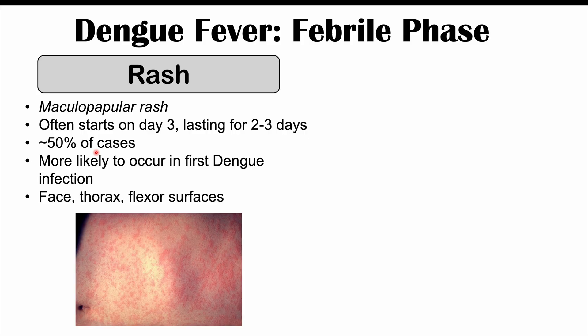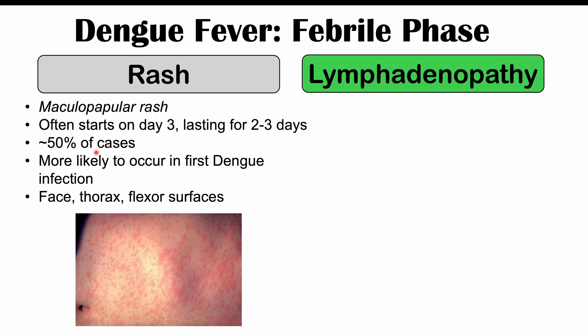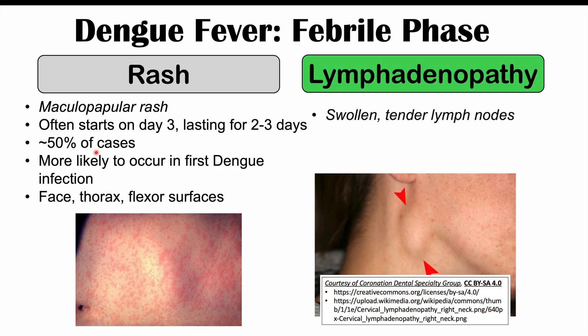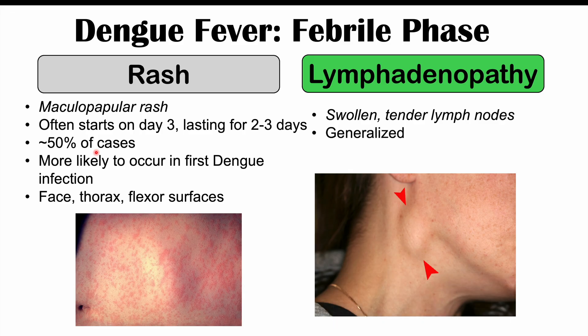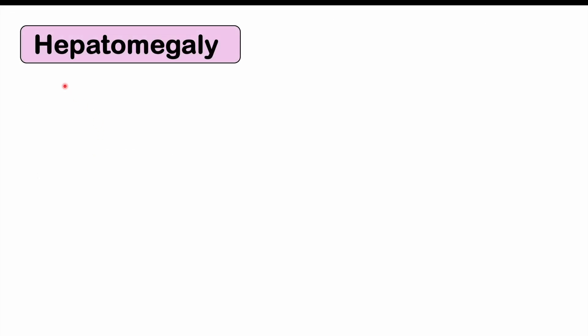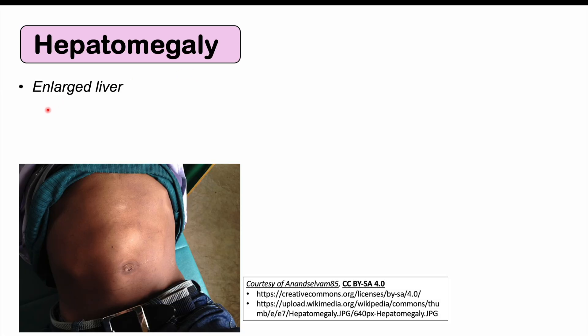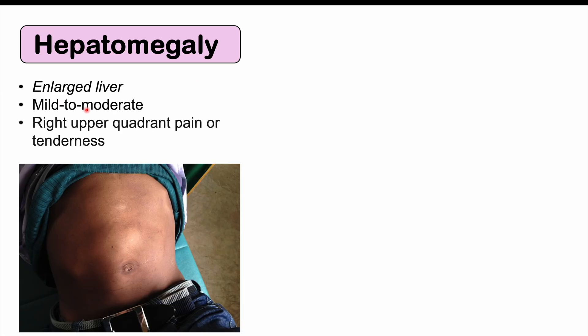The rash is going to occur most commonly on the face, the thorax or chest and abdomen, and also on the flexor surfaces. Lymphadenopathy — swollen, tender lymph nodes — can also occur, often generalized, and commonly seen in the neck and head. We can also see hepatomegaly, meaning an enlarged liver, that is mild to moderate but can cause right upper quadrant pain or tenderness, which is where the liver is located.